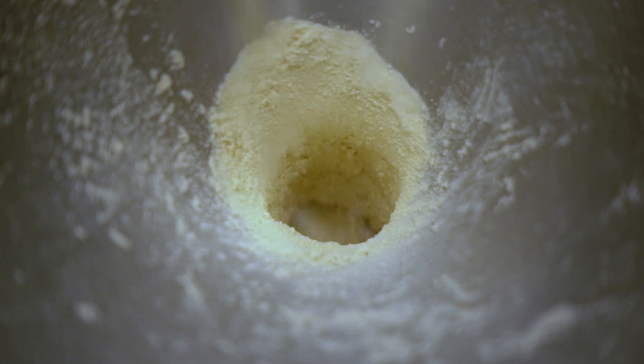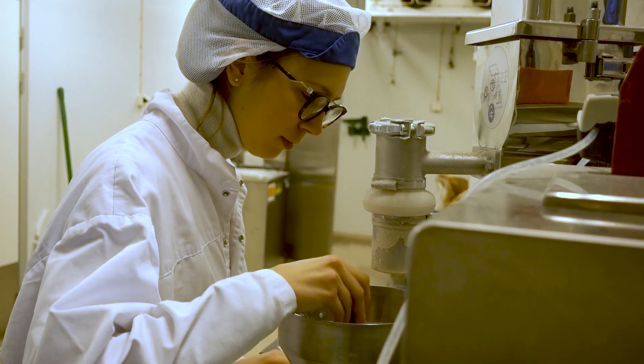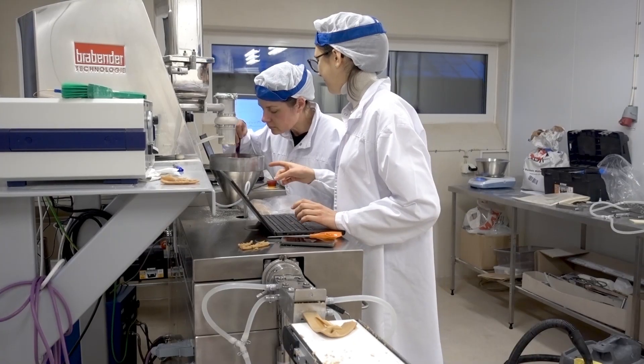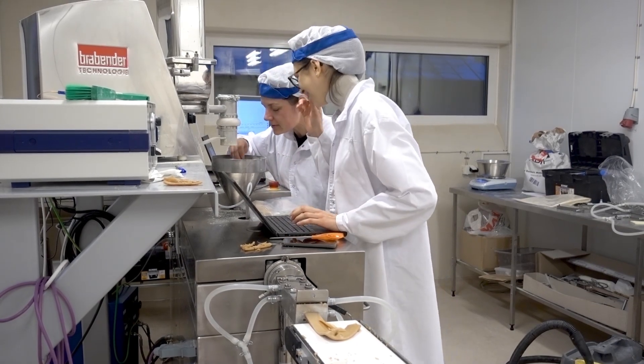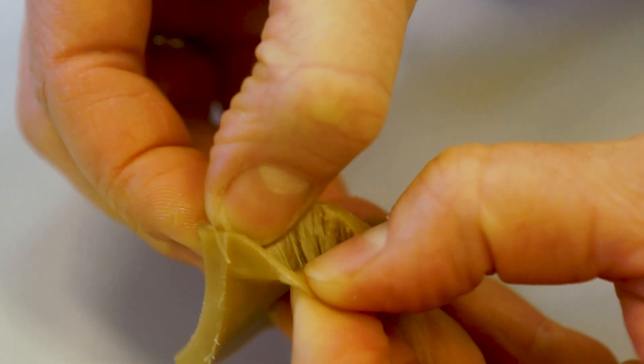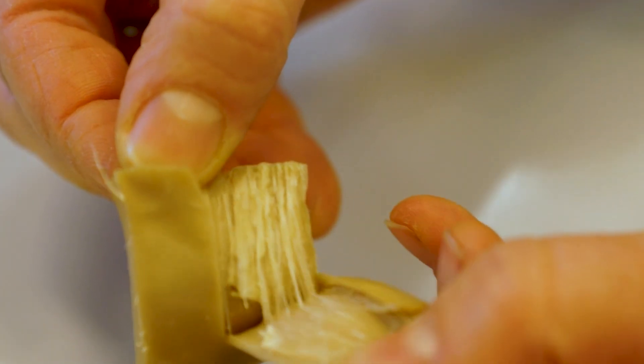You have the protein isolates and water and then they go inside a heated barrel. The point of extrusion is to get fibers so that you have a similar structure and texture to meat.